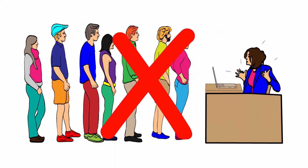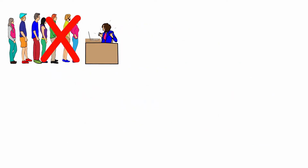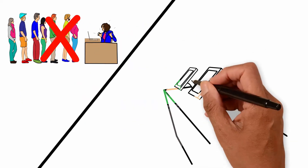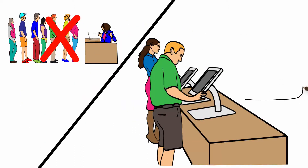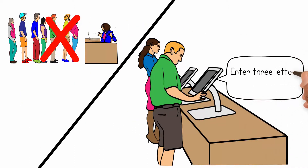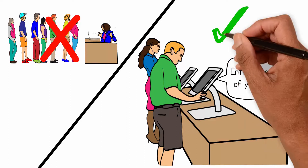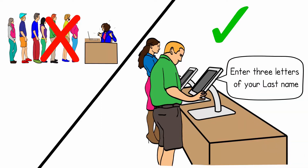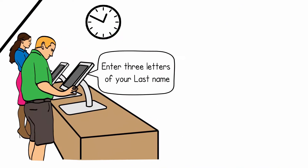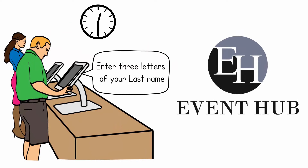In addition, say goodbye to long check-in lines and paper lists. When guests arrive, they can check in on any tablet device by answering only three letters of their last name. It's that easy. Guests check themselves in in a matter of seconds — no lines, no stress, thanks to Event Hub.